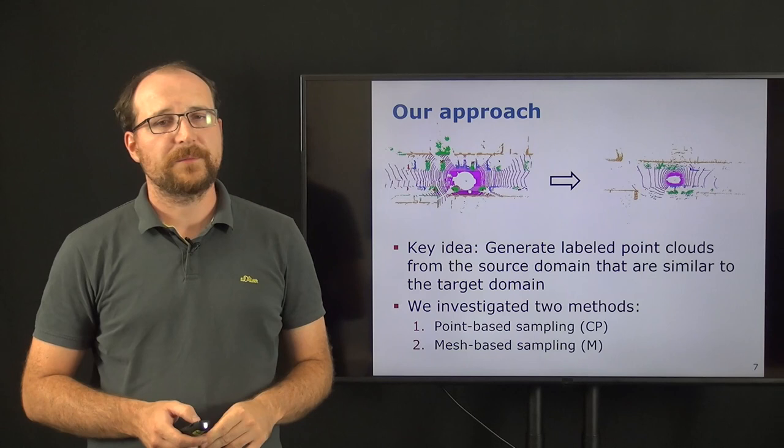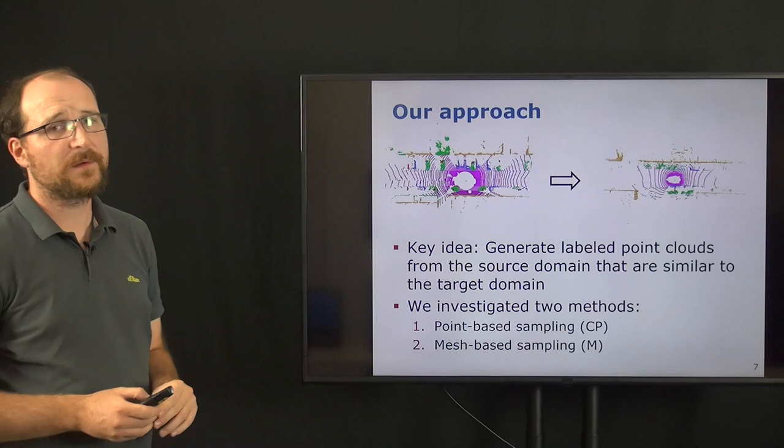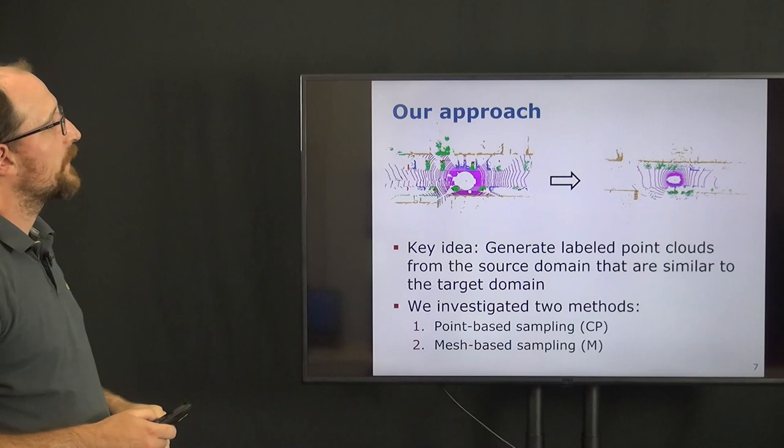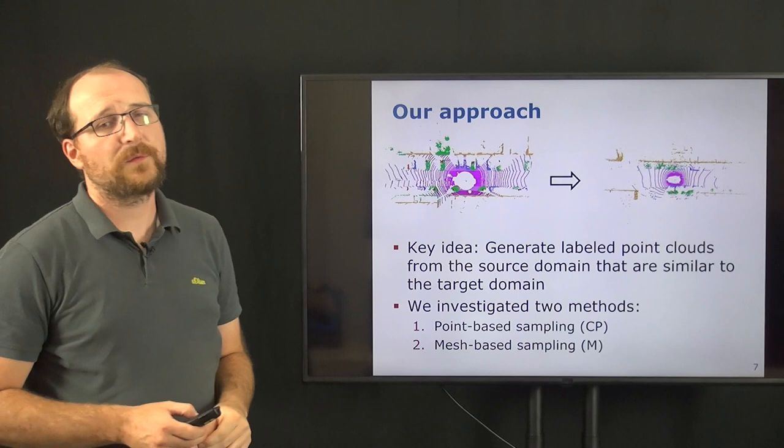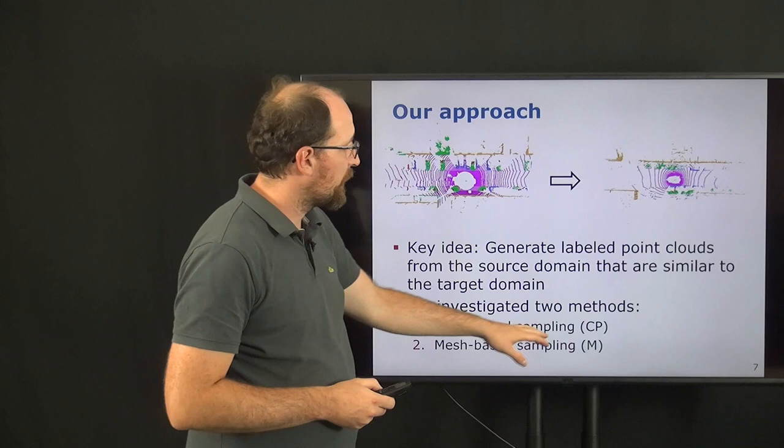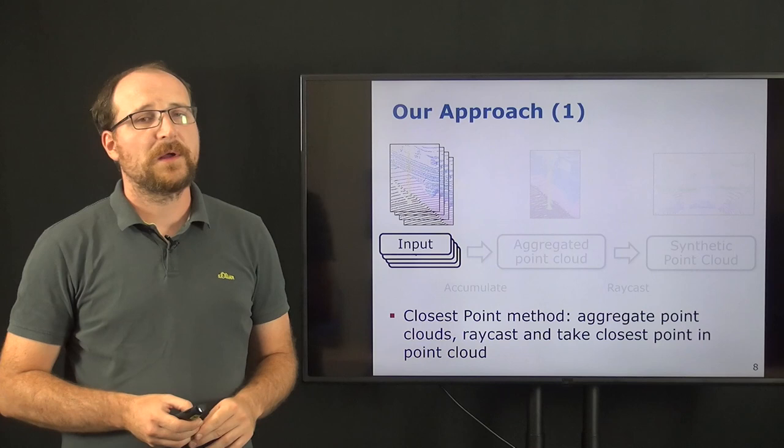Our approach is now that we generate a labeled point cloud that looks like taken from the target domain and transfer the scan with the label information from the source domain to the target domain, such that we have now a LiDAR scan that looks much similar to the target domain. And for this purpose, we investigated two different methods. One method is the point-based sampling method, which we call CP or closest point, or the mesh-based sampling method, which uses a mesh in between and we call M.